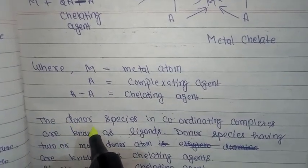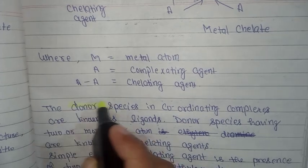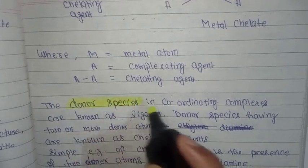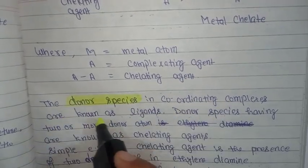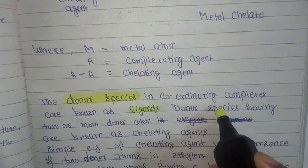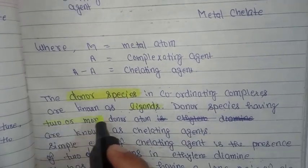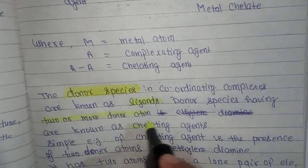The donor species in coordination complexes are known as ligands. Donor species having two or more donor atoms are known as chelating agents.